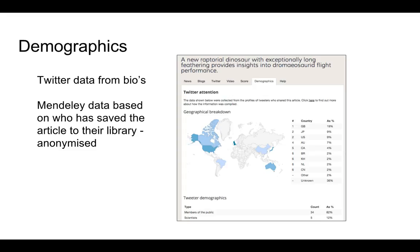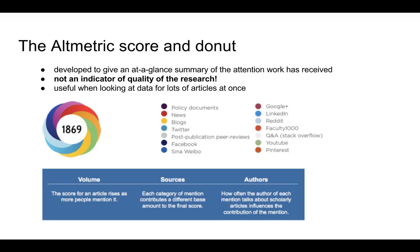We can see that 9% of all the tweets came from Japan and 9% came from the US. This has potential implications in terms of finding out where your research has been communicated — why perhaps this is happening in another country, whether there is some particular interest in your research in that country, and also whether there is potential for collaborations. The altmetric score across more platforms — policy documents, news, blogs, Twitter — means more colours will appear within the altmetric donut.